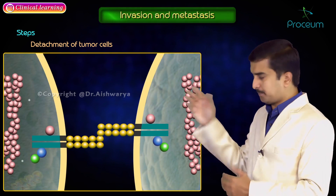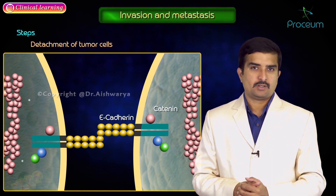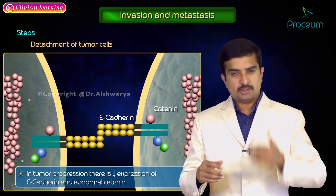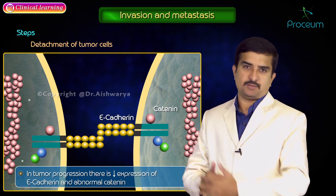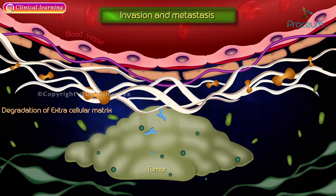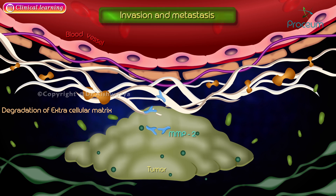The first step in metastasis is detachment of tumor cells. Normally, cells are attached by E-cadherins, but in tumor progression there is decreased expression of E-cadherins as well as abnormal β-catenin. Degradation of the extracellular matrix is extremely essential for migration of tumor cells, as tumors cannot migrate without it.